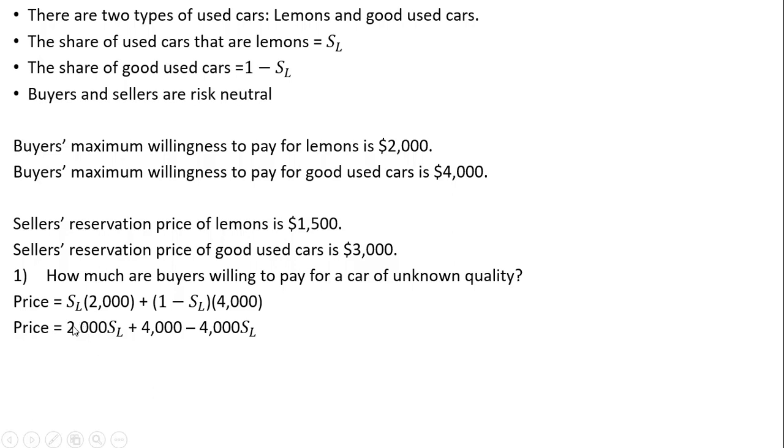Doing the math here: 2,000 × S_L + (1 − S_L) × 4,000, which equals 4,000 − 2,000S_L. Simplifying further, this is how much buyers are willing to pay for a car of unknown quality.